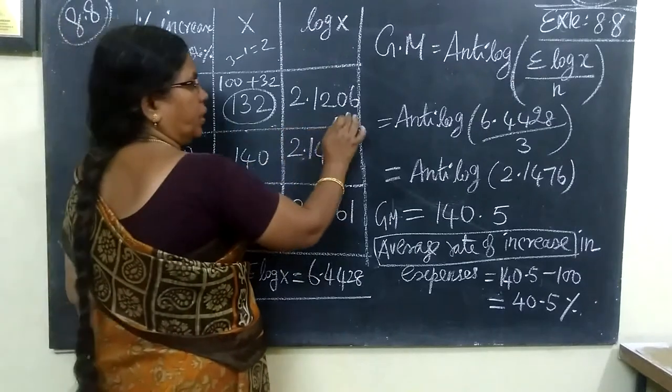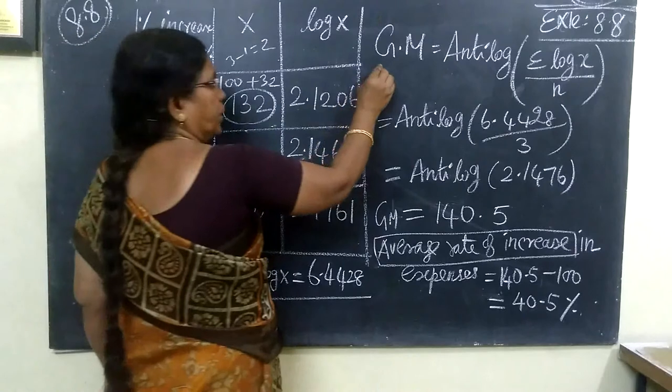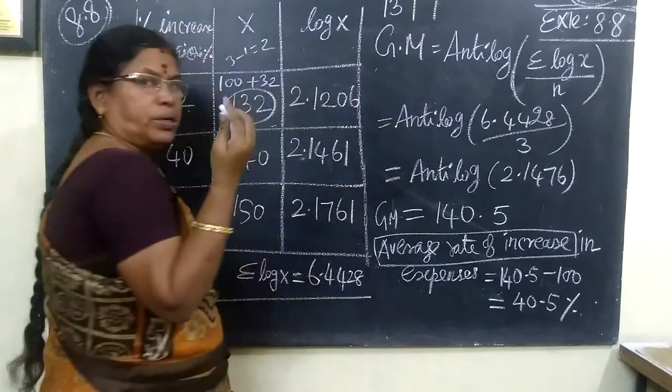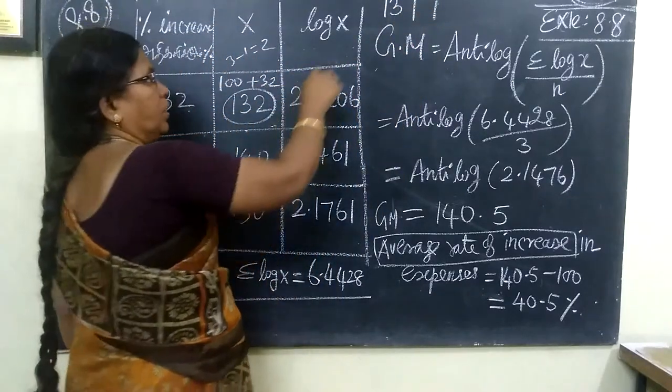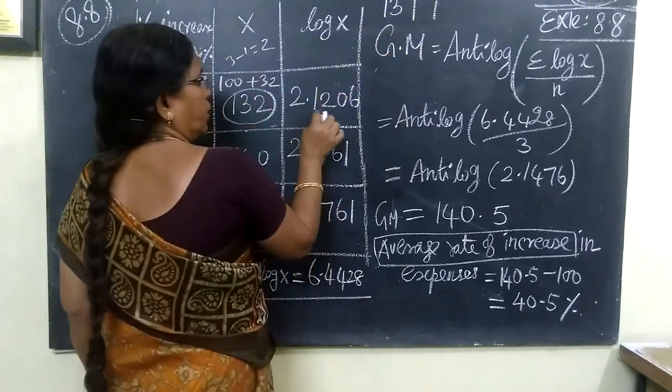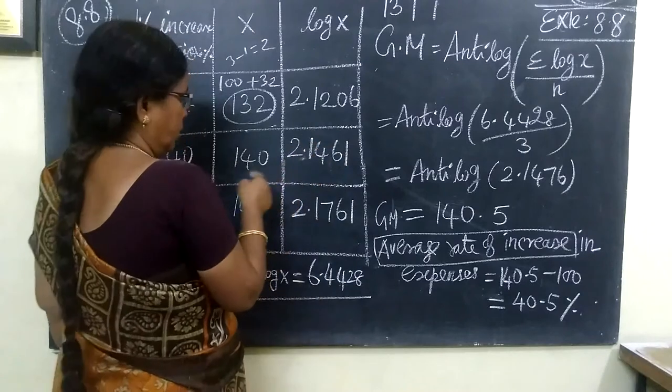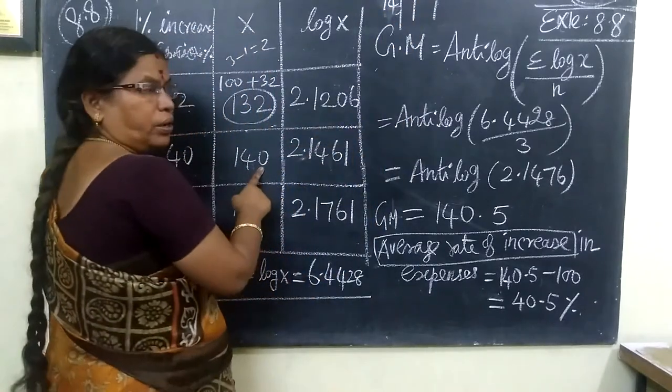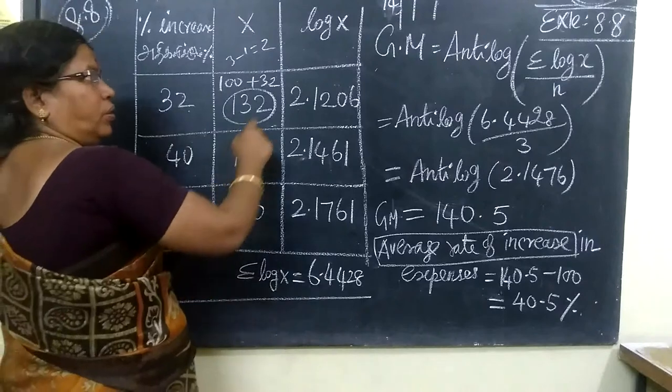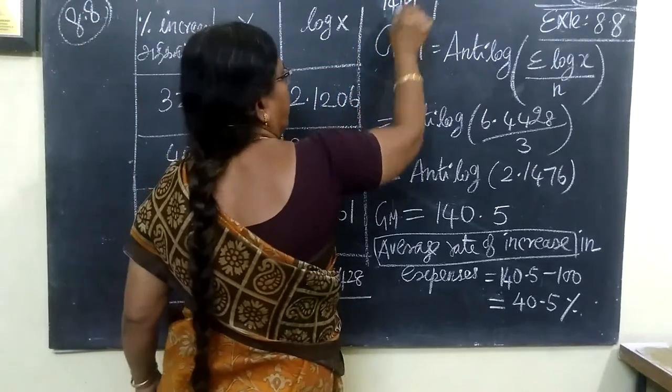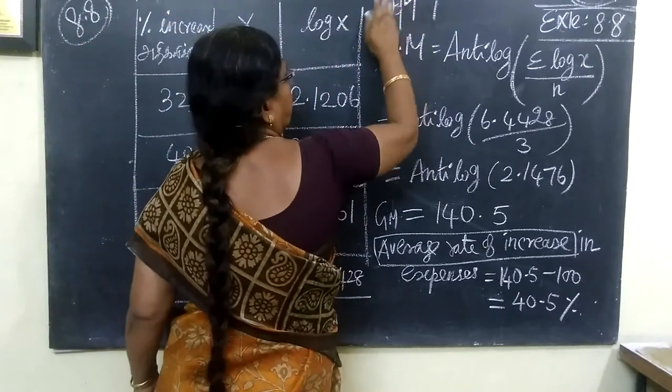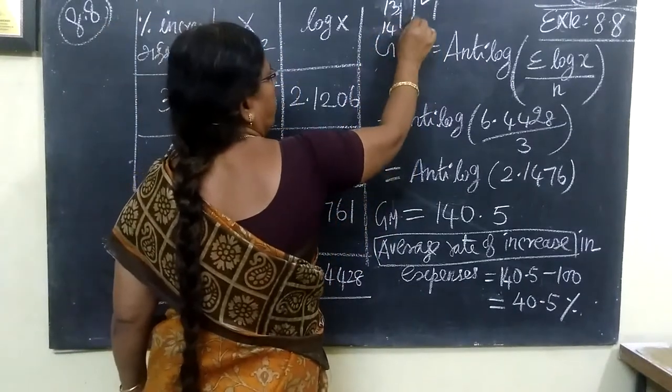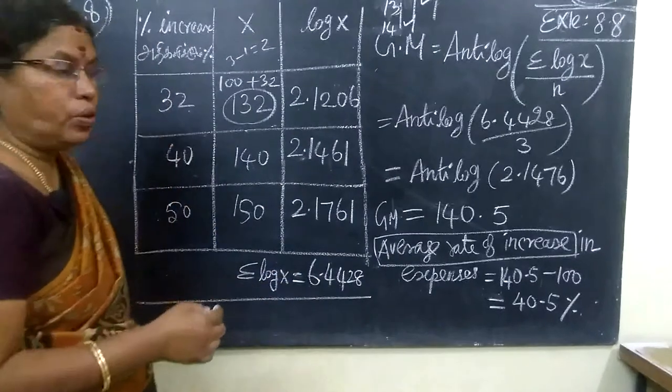Then we find the logarithmic values. For 132, we get log value 2.1206. For 140, we get 2.1461. For 150, we get 2.1761.